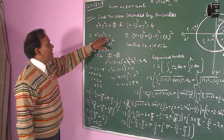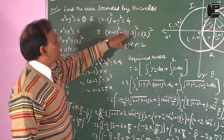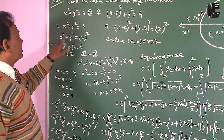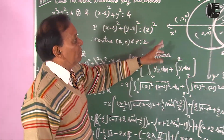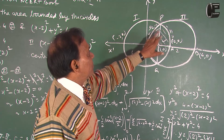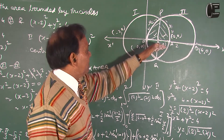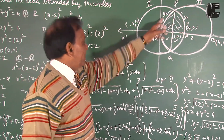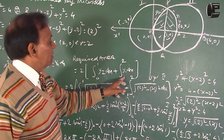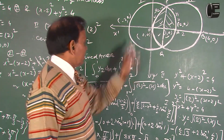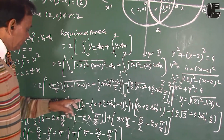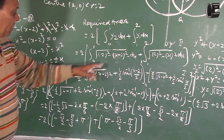Required area equals 2 times the integral from 0 to 1 of y₂ dx plus the integral from 1 to 2 of y₁ dx, where y₂ is from the second circle and y₁ from the first circle. By applying the standard formula — x minus 2 over 2 times under root a squared minus x squared plus a squared over 2 times sin inverse x by a — we integrate both parts and put the upper limit.